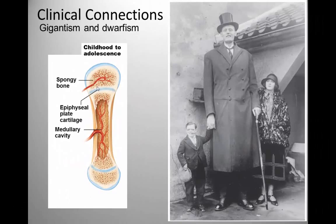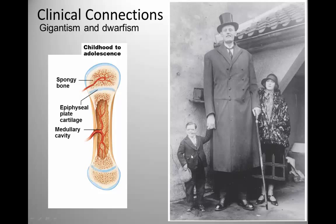Abnormal secretion of growth hormone can lead to several pathological conditions. In many cases, hyper- or hyposecretion of growth hormone results from pituitary adenomas, which are non-cancerous tumors found in the pituitary gland. An increase in growth hormone levels in children before the epiphyseal plates have ossified results in gigantism, where long bone growth is exaggerated. Hyposecretion of growth hormone in childhood results in the opposite problem, dwarfism.